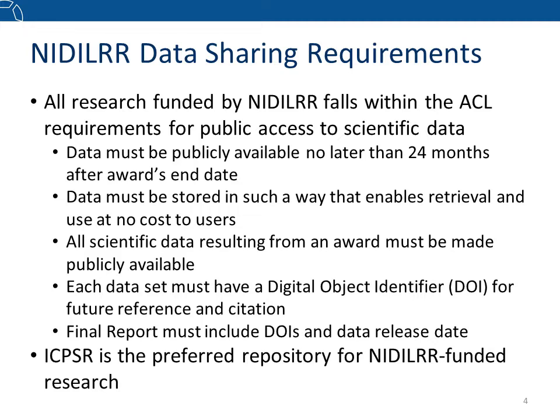All scientific data that result from an award must be made publicly available. If an award funds more than one research project, or a research project generates more than one type of scientific data, all datasets from all projects must be made publicly available. Each dataset must have a Digital Object Identifier, or DOI, for future reference and citation. In the final report for your award, you must include the DOIs for all datasets, as well as the release date for your data if you choose to embargo them. This means that you must deposit your data at a repository before submitting your final report.